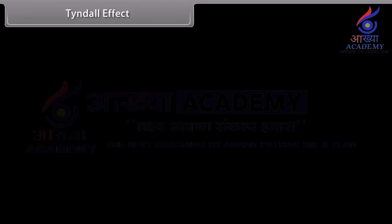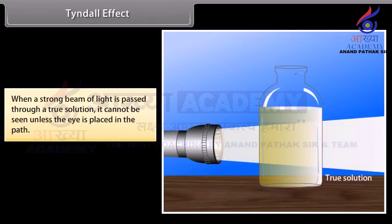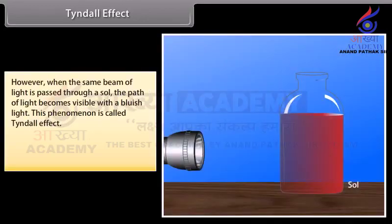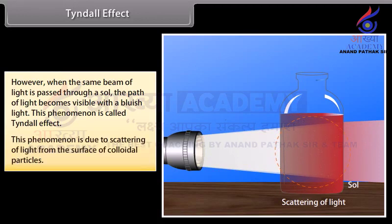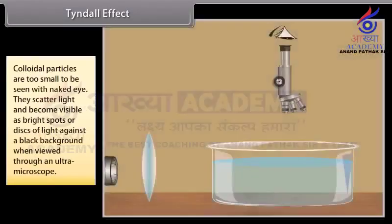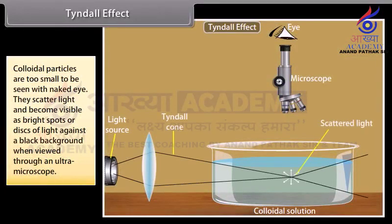Tyndall effect. When a strong beam of light is passed through a true solution, it cannot be seen unless the eye is placed in the path. However, when the same beam of light is passed through a sol, the path of light becomes visible with a bluish light. This phenomenon is called the Tyndall effect, and is due to scattering of light from the surface of colloidal particles. Colloidal particles are too small to be seen with the naked eye; they scatter light and become visible as bright spots or discs of light against a black background when viewed through an ultramicroscope.